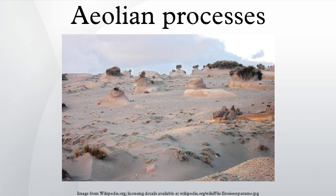Wind-deposited materials hold clues to past as well as to present wind directions and intensities. These features help us understand the present climate and the forces that molded it. Wind-deposited sand bodies occur as sand sheets, ripples, and dunes. Sand sheets are flat, gently undulating sandy plots surfaced by grains that may be too large for saltation. They form approximately 40% of aeolian depositional surfaces. The Selimah sand sheet in the eastern Sahara desert occupies 60,000 square kilometers in southern Egypt and northern Sudan and is one of the Earth's largest sand sheets.